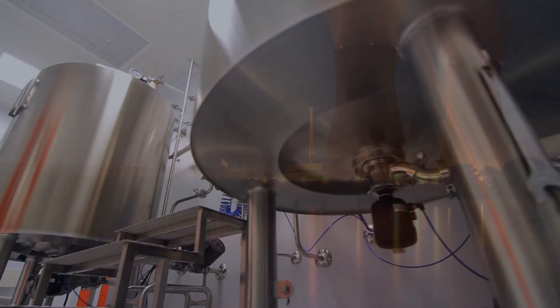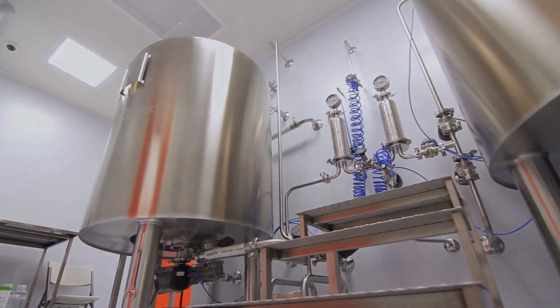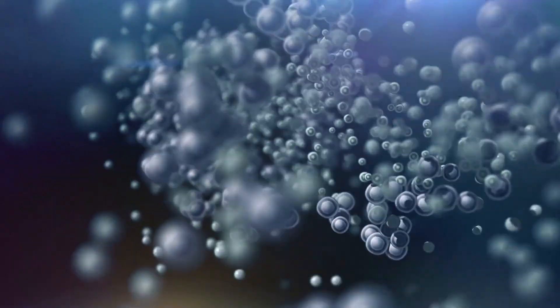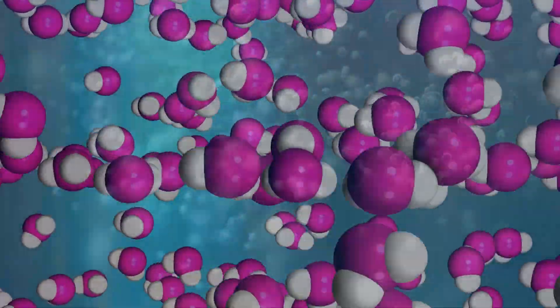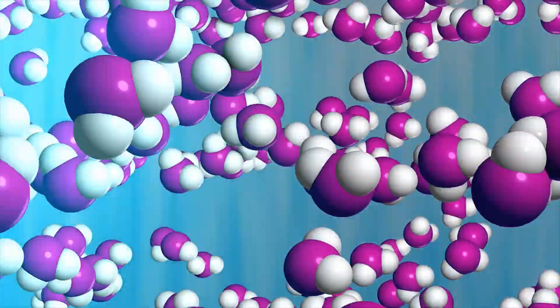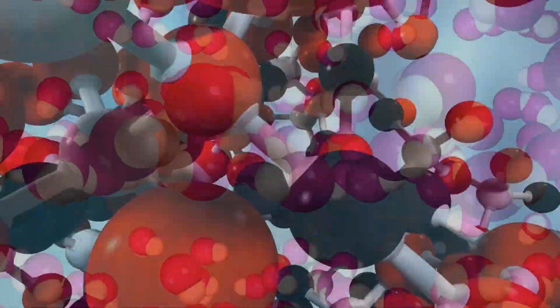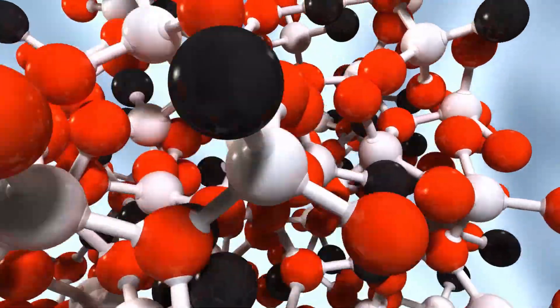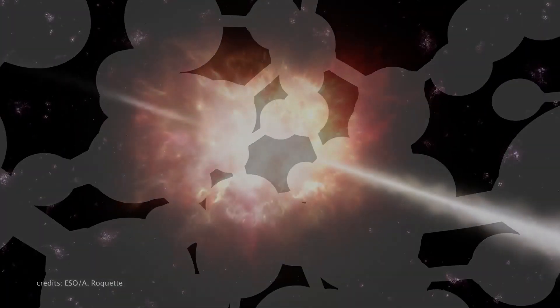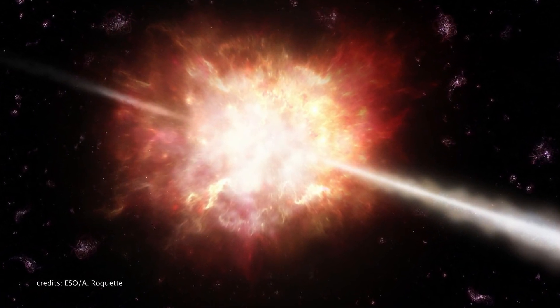The detector used by Cowan and Rhinus consisted of two huge tanks of water. Most of the neutrinos produced in the nuclear reaction passed through the water tank, but a few of them hit molecules of water. When this happens, an inverse beta decay reaction occurs. The proton inside the water molecule captures the neutrino and turns into a neutron, emitting a positron as well. The positron then quickly disappears, producing two gamma rays that are easily detected.